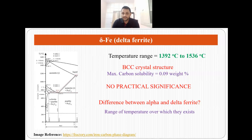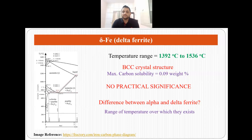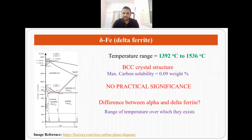One may ask: what is the difference between alpha ferrite, which forms from 0 to 911 degrees centigrade, and delta ferrite, which occurs from 1392 to 1536 degrees centigrade? They are both similar — they both have BCC crystal structure. The only difference is the temperature range over which they exist. All three phases — alpha ferrite, austenite, and delta ferrite — are forms of iron but occur at different temperature ranges. Mostly, we use gamma ferrite or austenite in deformation processes, as FCC is more ductile. So if we convert iron into the austenite state from the BCC state, we can deform iron and make the products we desire. That is the significance of all three forms of iron.